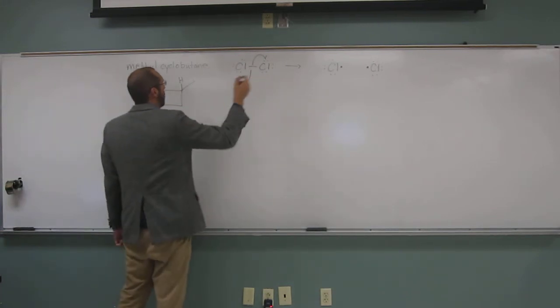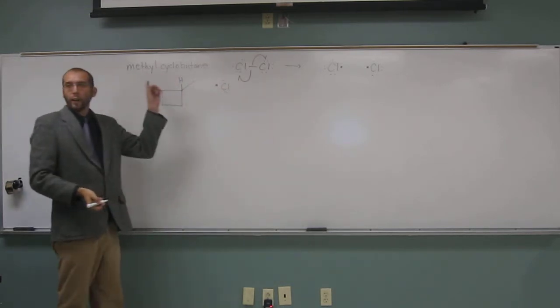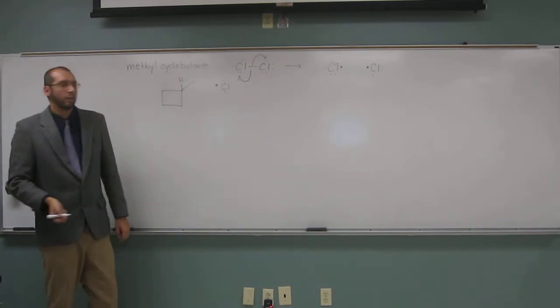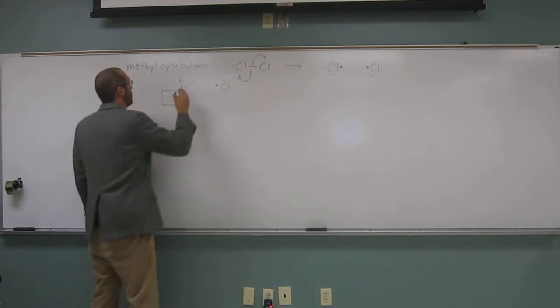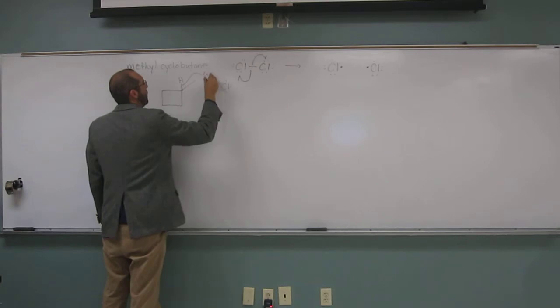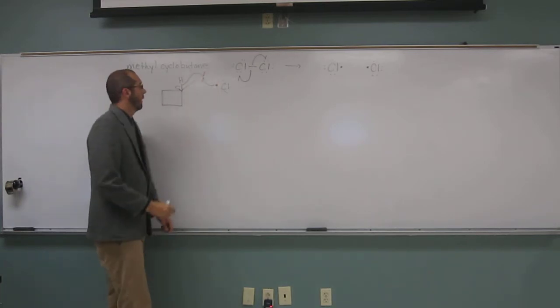So now one of those high energy chlorine atoms is going to come and extract that hydrogen in there. Because remember, we want to make the most stable radical. So what's going to happen? The two fishhook arrows go like that, and then the other one go like that.